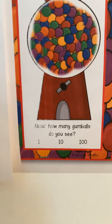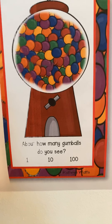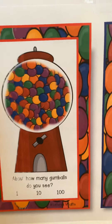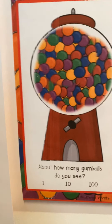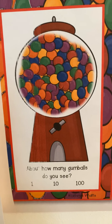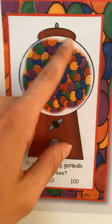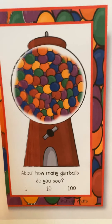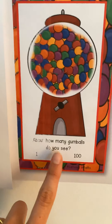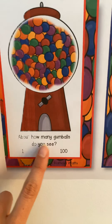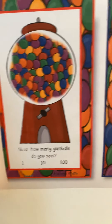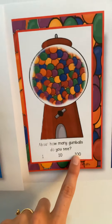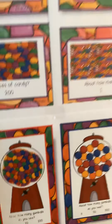Let's look at this gumball machine. About how many gumballs do you see? One, ten, or one hundred? Well, I see way more than one — that's not an option. Ten or one hundred. I can see that it is packed in there, all layered up on each other, so I think it's got to be more than ten. So my reasonable guess — the magnitude of gumballs in here — is one hundred.